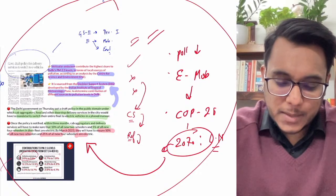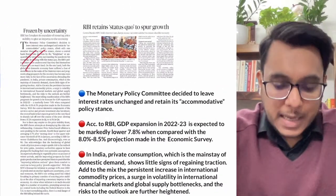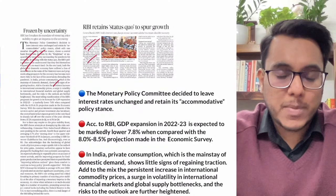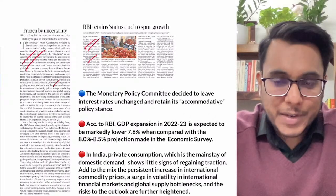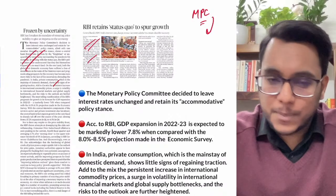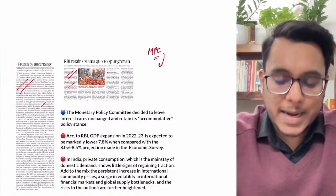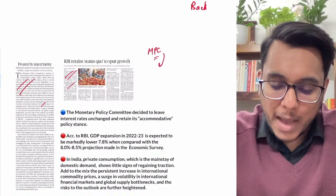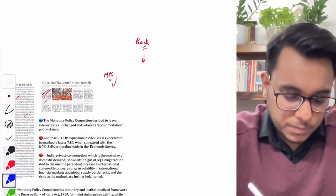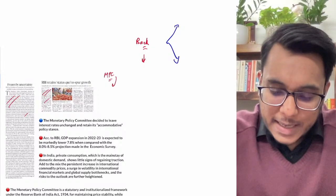Moving to the next articles: 'Frozen by Uncertainty' and 'RBI Retains Status Quo to Spur Growth' — both from The Hindu, talking about the Monetary Policy Committee's recent decision on inflation. The background is this: there are two competing priorities — on one hand, growth; on the other hand, inflation.